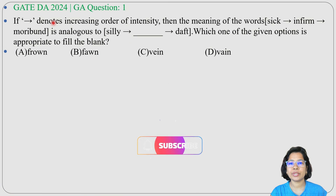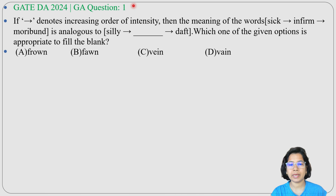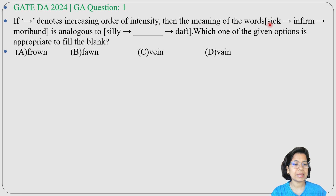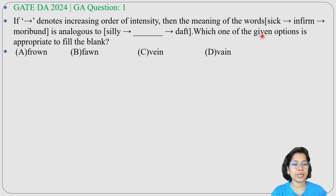Let's have one previous question of general aptitude. This question was asked in GATE 2024 GA question number 1. If the arrow mark denotes increasing order of intensity, then the meaning of sick → infirm → moribund is analogy to silly → blank → daft. Which one of the given options is appropriate to fill the blank?